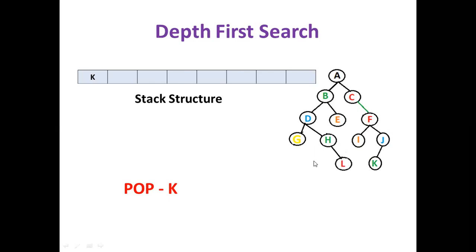That is one key issue faced in depth first search. To overcome this, we have iterative deepening depth first search and depth-limited search techniques. These are used to overcome the drawback of depth first search.